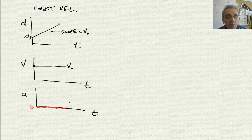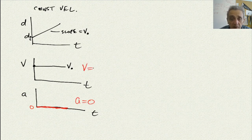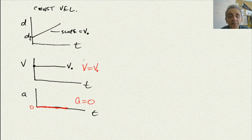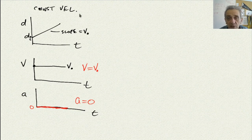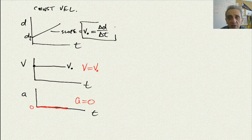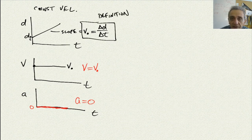What are the equations of these lines? We know the equation for acceleration equals zero — that's very straightforward. We also know the equation of the velocity line: v equals v naught, whatever that constant value is. The equation for the DT line is slightly different. We can get it from the definition of slope, which is rise over run. So the slope is delta d over delta t.